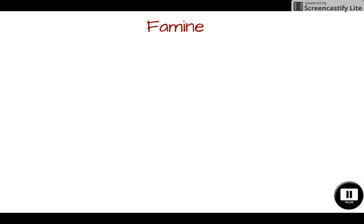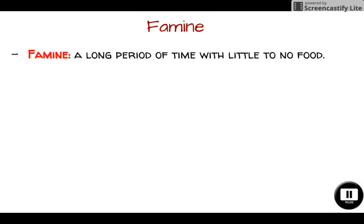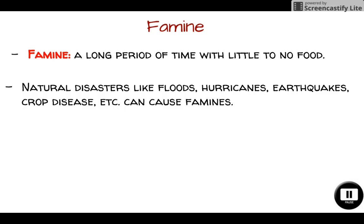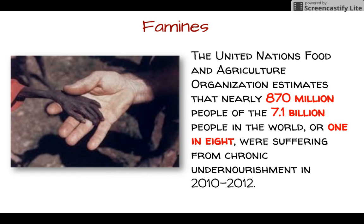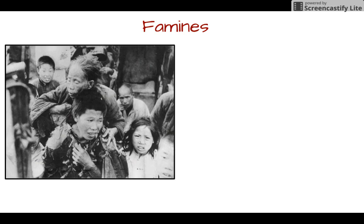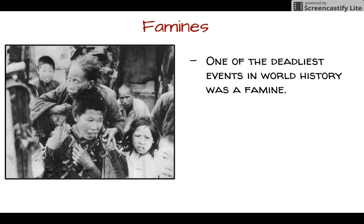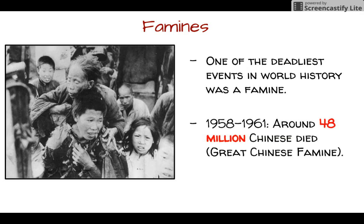Additionally, if we cannot grow food, we suffer through a famine — a long period of time with little or no food, usually tied to natural disasters like floods, hurricanes, or earthquakes. Famines are serious business. The UN estimates that today 870 million people, or one in eight people on this planet, suffer from chronic malnourishment. One of the worst losses of life in human history occurred between 1958 and 1961 in China, when 48 million people died because of famine.